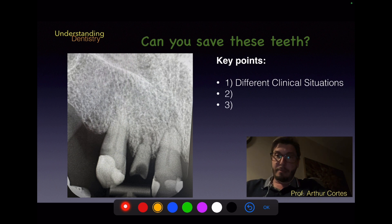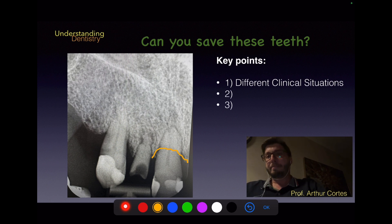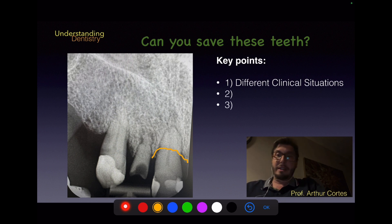Let's analyze the alveolar bone levels. Sometimes two lines are visible because of the buccal and palatal plates, but the levels are usually similar. The marginal bone level is at the middle third of this root — we need to take this into consideration in our decision-making.